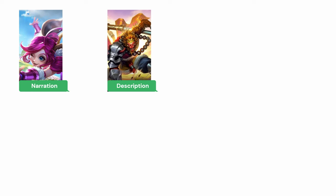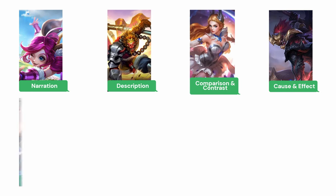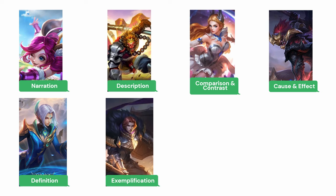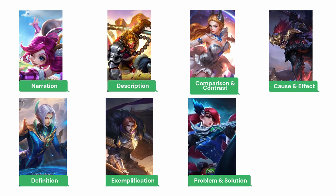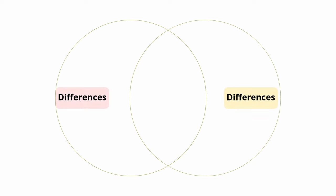The patterns to choose from are: Narration, Description, Comparison and contrast, Cause and effect, Definition, Exemplification, Problem and solution, and Persuasion. Choose two characters. Write the differences on the left side and on the right side, and write the similarities in the middle.